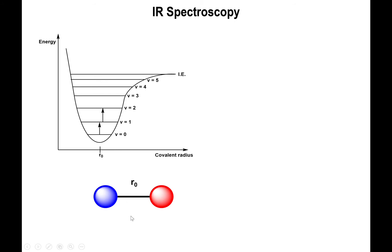Bonds can vibrate. They can compress themselves to smaller values, in which case the energy goes up based on this curve, or they can expand themselves, making the distance larger, in which case you also get a higher energy. Altogether, you get this particular look to the function.